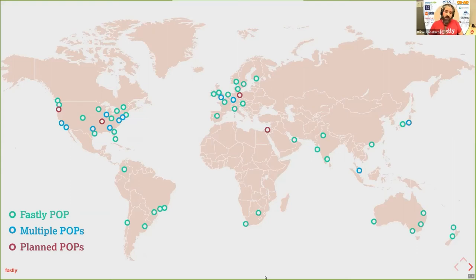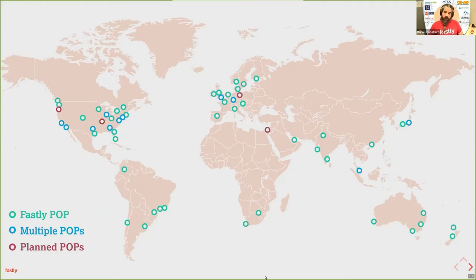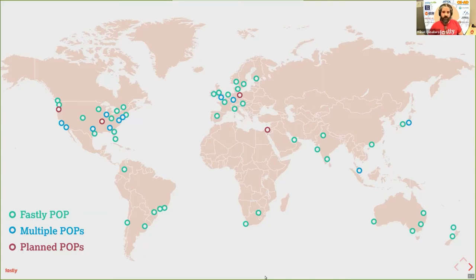Why am I speaking about infrastructure as code from a cloud provider perspective? We are also cloud provider users — we have orchestration services, a control plane, and we also consume other providers' cloud. That's why we use infrastructure as code. In addition, you can configure your Fastly configuration using the Terraform provider we maintain. So infrastructure as code is very relevant to us.